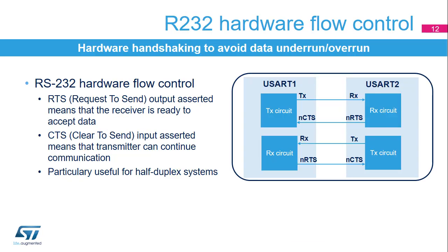In RS-232 communication, it is possible to control the serial data flow between two devices by using the NCTS input and the NRTS output. These two lines allow the receiver and the transmitter to alert each other of their state. The figure shows how to connect two devices in this mode to prevent dropped bytes or conflicts in case of half-duplex communication. Both signals are active low.